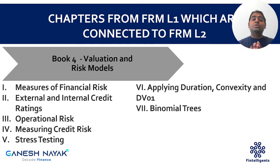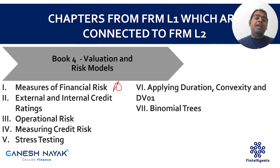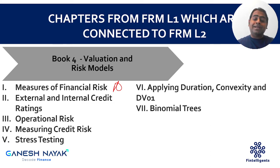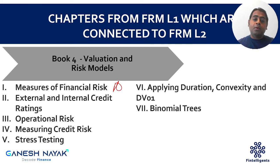The last book — Valuation and Risk Models — is very important for Level 2 because many topics appear directly there. First, Measures of Financial Risk is very important as it gives you the basics of VaR and Expected Shortfall. The Market Risk book's first three to four chapters are connected to VaR — they cover VaR, backtesting of VaR, VaR mapping, and estimation of market risk measures.